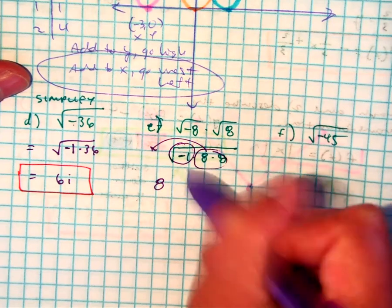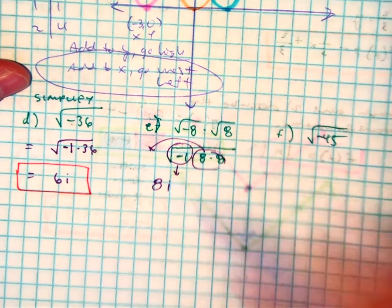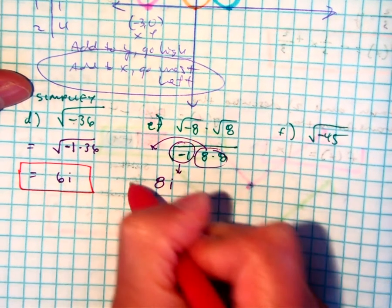And the square root of negative 1 is? Our answer is 8i.